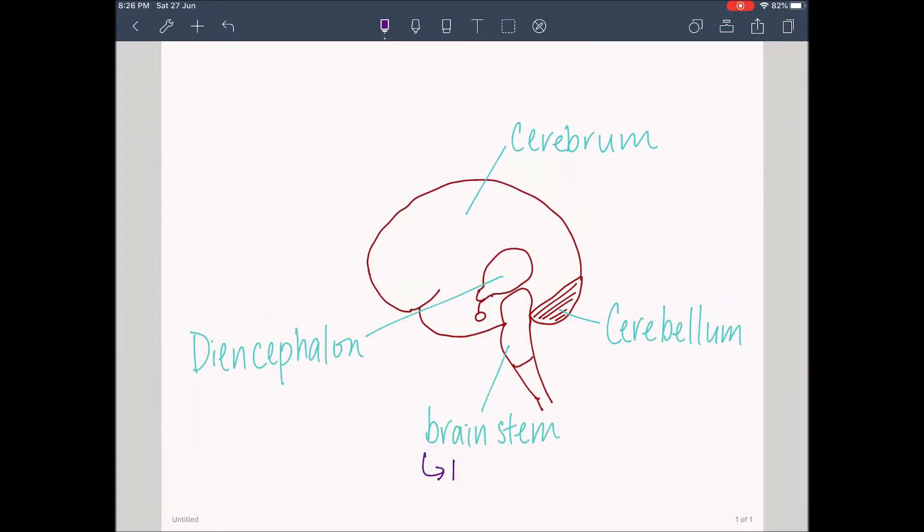The brainstem is the respiratory and cardiovascular control center. It controls basic autonomous functions, for example, breathing, circulation, and digestion.